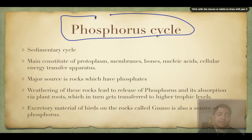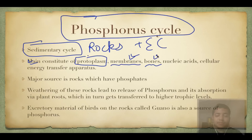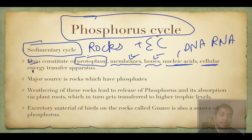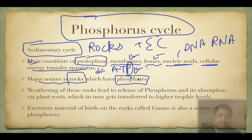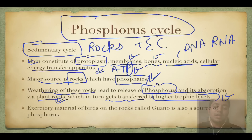Finally, the phosphorus cycle - a sedimentary cycle because the major reservoir is rocks, also called the earth's crust. Phosphorus is a main constituent of protoplasm, cell membranes, bones, and nucleic acids - DNA and RNA both have a phosphate backbone. It is also critical for cellular energy transfer in the formation of ATP (adenosine triphosphate). Weathering of rocks leads to release of phosphorus, and its absorption occurs via plant roots. It gets transferred to higher trophic levels, but unlike carbon and nitrogen, it does not go to the atmosphere in significant amounts.